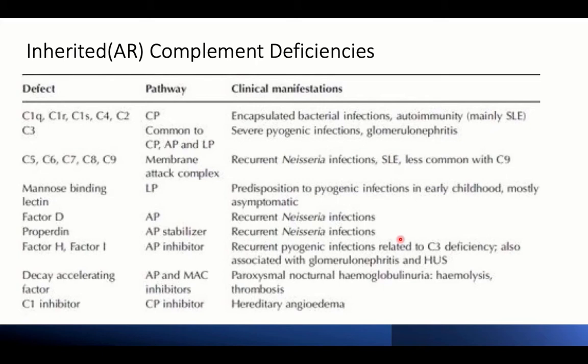Inherited complement deficiencies are usually autosomal recessive mutations. Deficiencies may occur in early components like C1, C4, and C2 — C1 has subclasses Q, R, and S. There is high susceptibility to encapsulated bacterial infections, and these deficiencies are also associated with autoimmunity like systemic lupus.